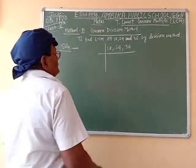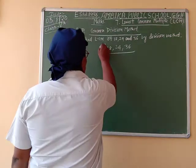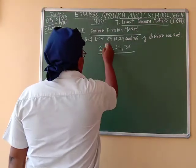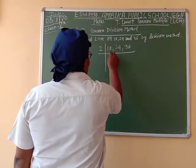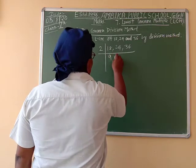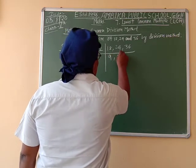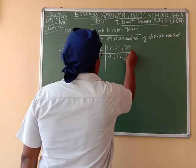We choose the smallest prime number that exactly divides at least two of the given numbers. So first we divide by 2, giving us 9, 12, and 18.